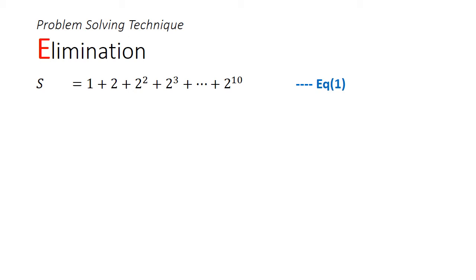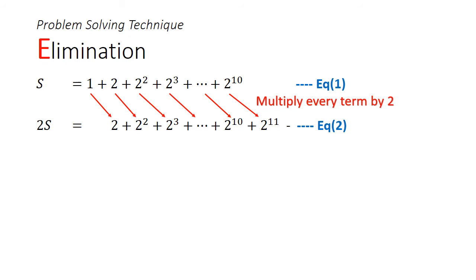To find the sum of this geometric progression, we're going to use a trick similar to finding the sum of an arithmetic progression. We start by letting s be the sum from 1 to 2 to the power of 10, and we're going to call this equation 1. We then multiply each term by the common ratio, which is 2. This gives us equation 2. By subtracting equation 1 from equation 2,